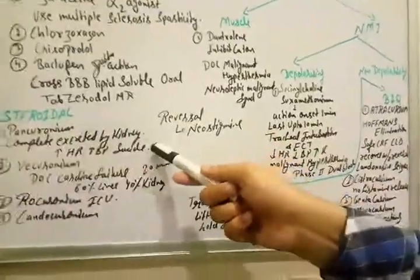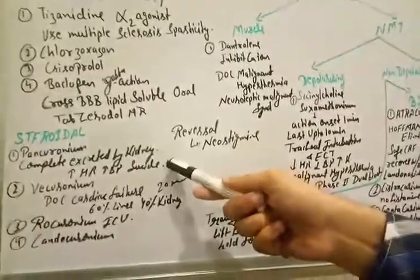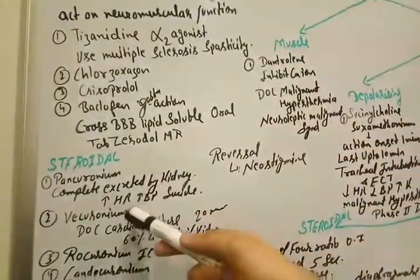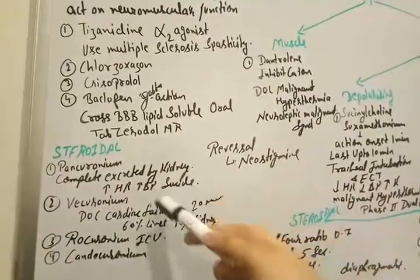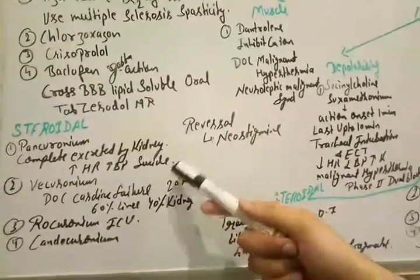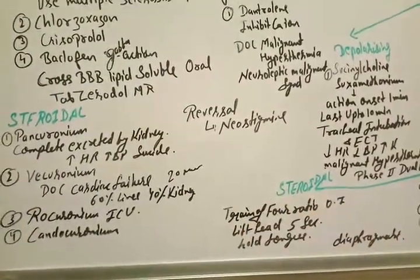So it is really contraindicated in renal failure. It causes the high blood pressure, high heart rate and it is used in suicide. It causes the paralysis of the muscles for a long time.